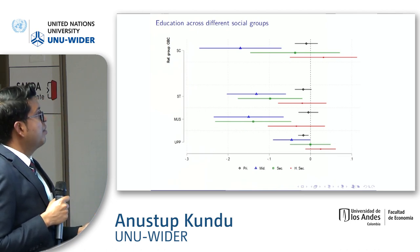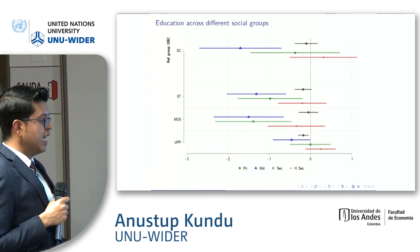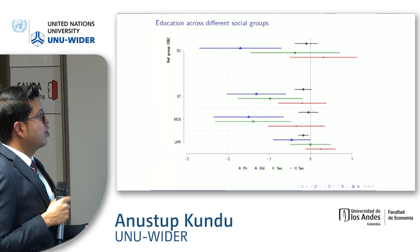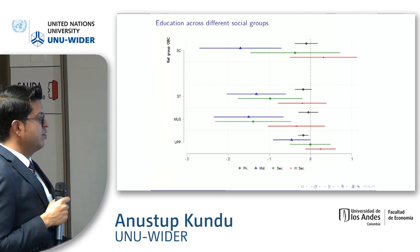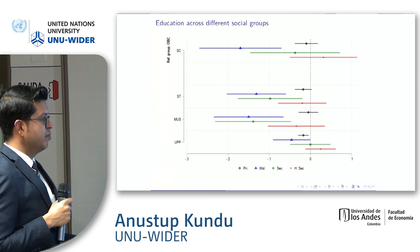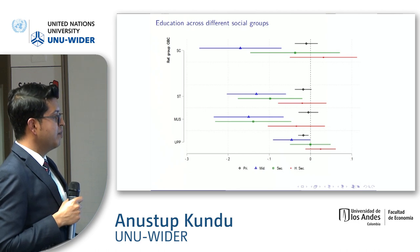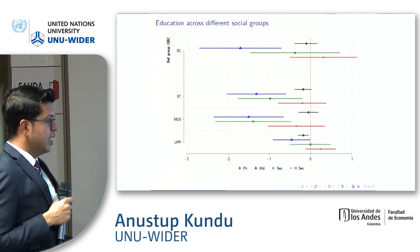For educational provision — PRI is primary school, MAID is middle school, SEC is secondary school, and there is also high secondary school — in comparison to OBCs: SCs are worse off; STs are also worse off for all segments apart from primary school and high secondary, which are insignificant. For Muslims a similar trend holds. For upper caste they are also worse off, at least for primary and middle school.